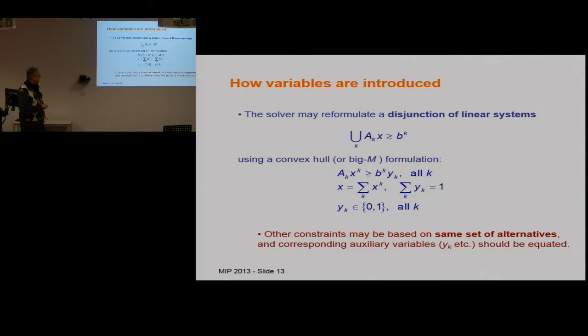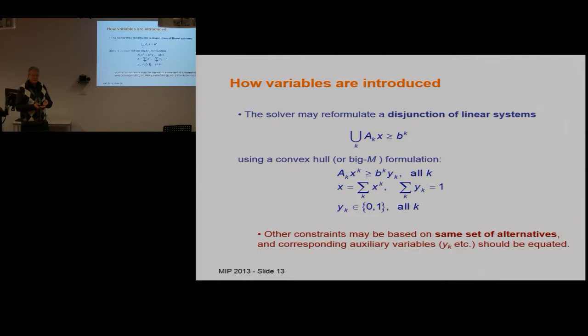In constraint programming, you may want to model the problem using two different variable systems, which is very common. You may have one set of variables indicating the job to which you assign a worker, and vice versa. Some constraints are expressed in terms of the x's and some in terms of the y's. You want to indicate channeling constraints in the model to connect the variables. This can be done automatically — channeling constraints can get quite complicated in sophisticated modelling situations.